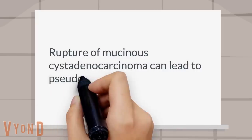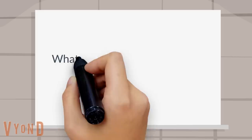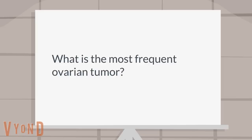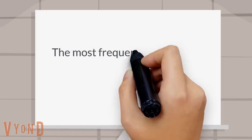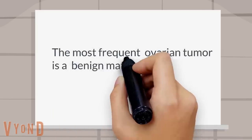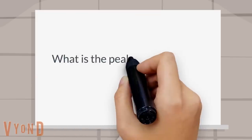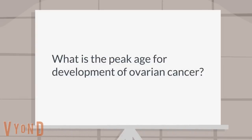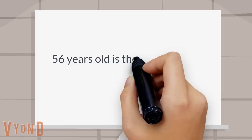Which malignant ovarian tumor is associated with pseudomyxoma peritonei? Rupture of mucinous cystadenocarcinoma can lead to pseudomyxoma peritonei. What is the most frequent benign ovarian tumor? The most frequent ovarian tumor is a benign mature teratoma, or dermoid cyst.